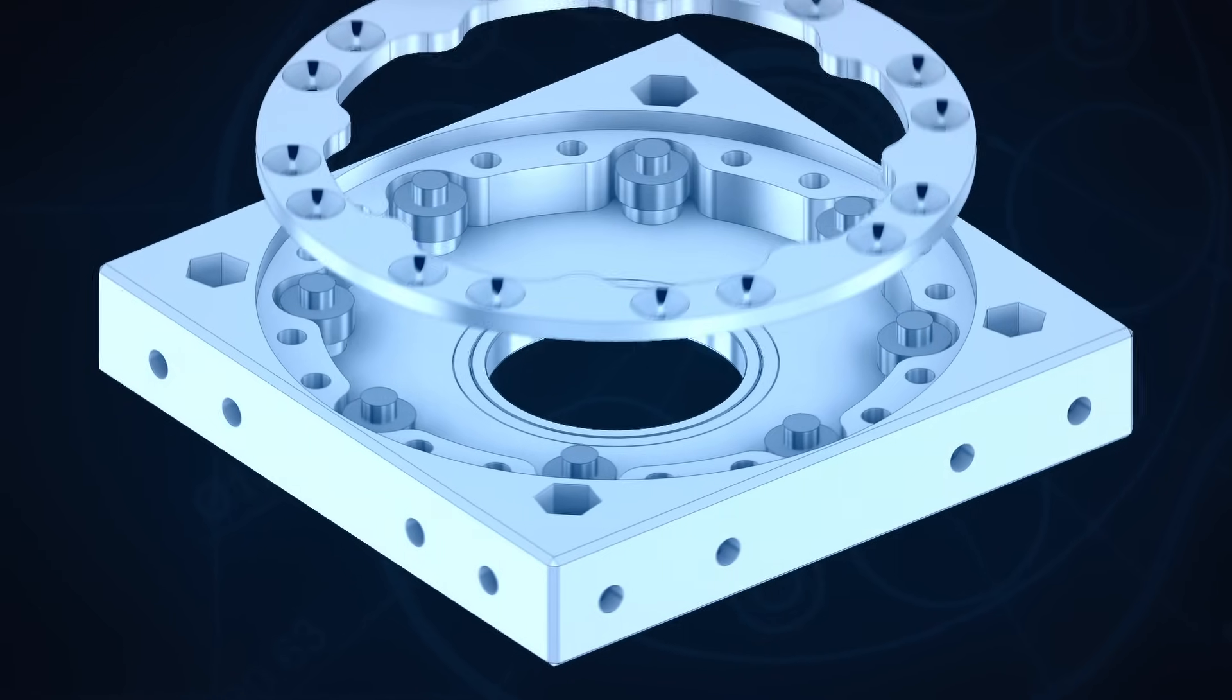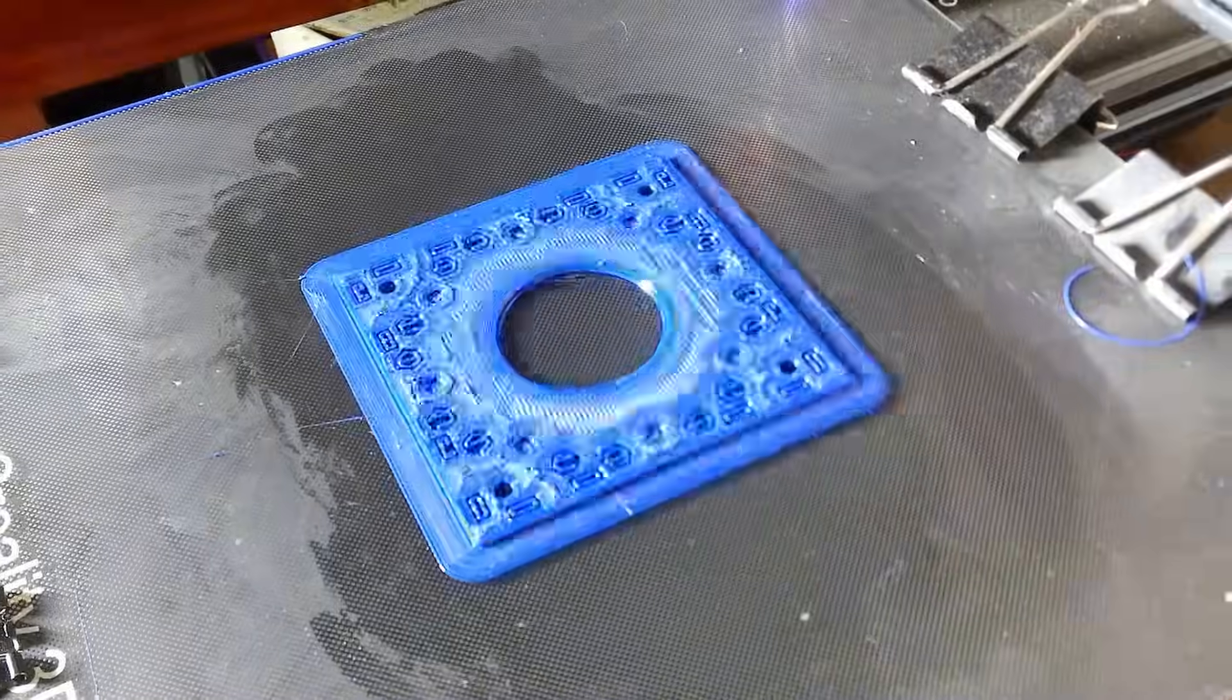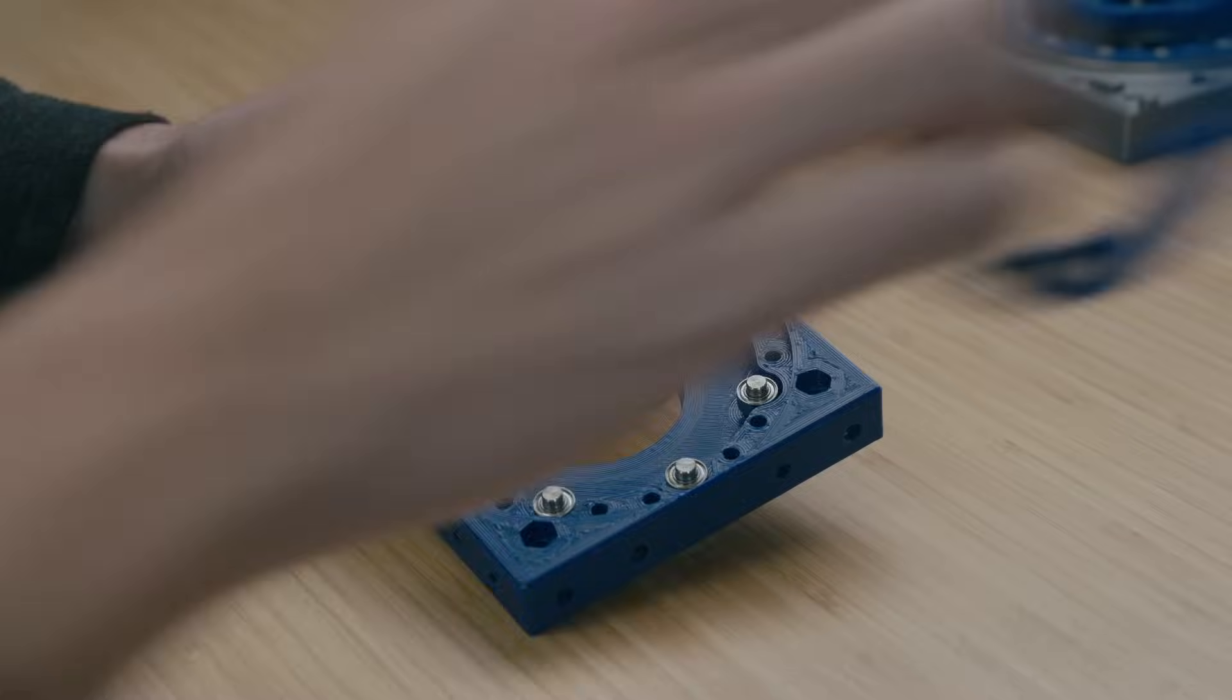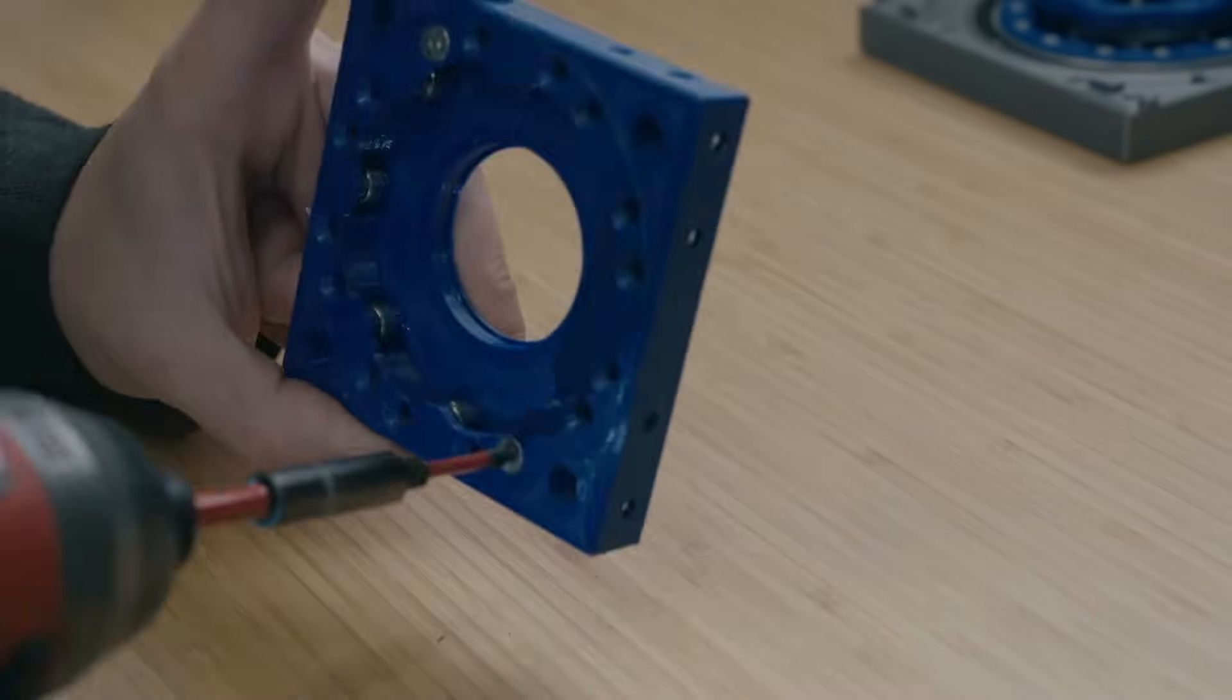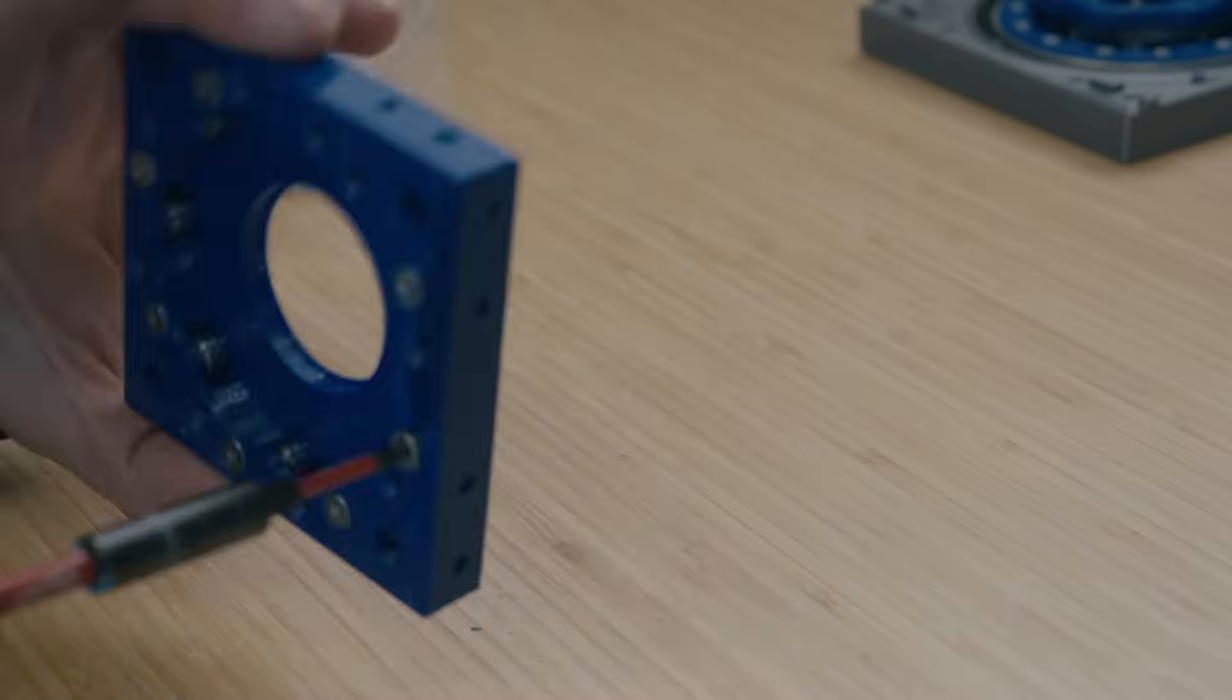Next, we move on to the fixed Stage 1 housing. And this has eight pins and rollers installed. And once again, the rollers are supported on both sides to increase stiffness. A lot of screws later, and the Stage 1 housing was ready to go.